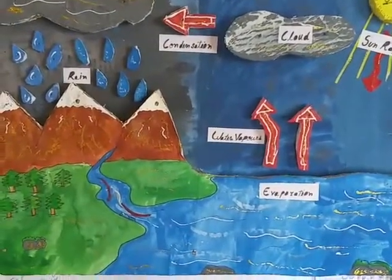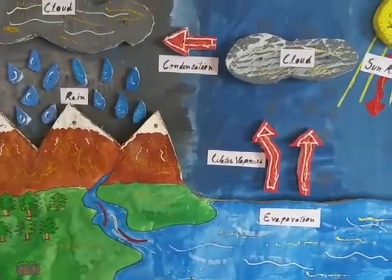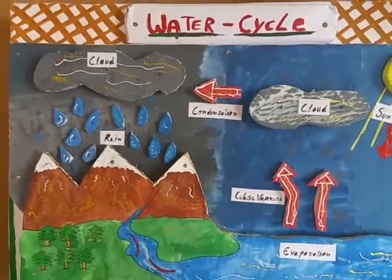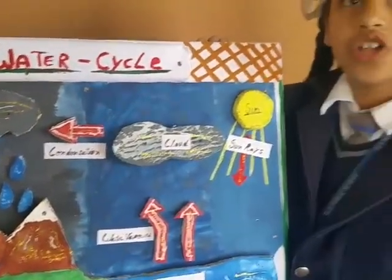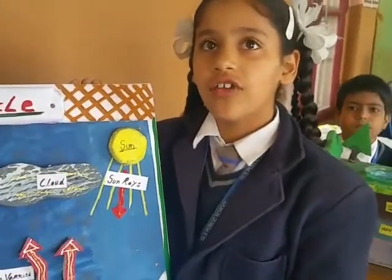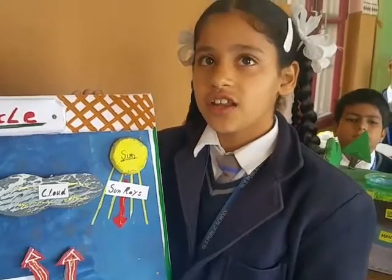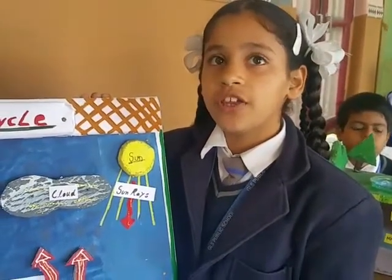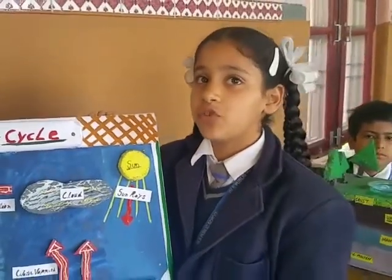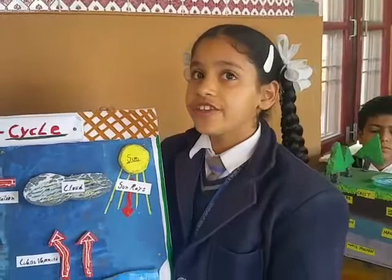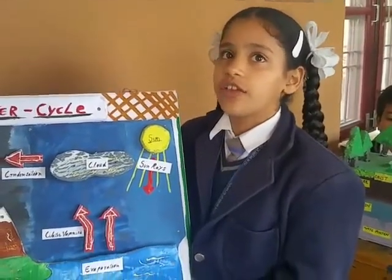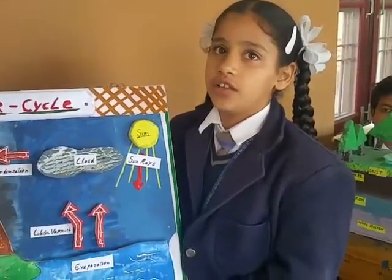The water vapor rises, mixes with dust, and gets cool to form clouds. The water drops start becoming bigger and heavier and fall down as rain. The rain water goes back into lakes and ponds where it evaporates again. The cycle continues. This is called the water cycle. Thank you and have a nice day.